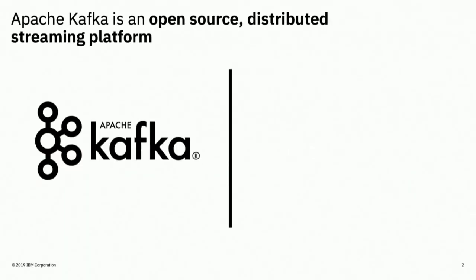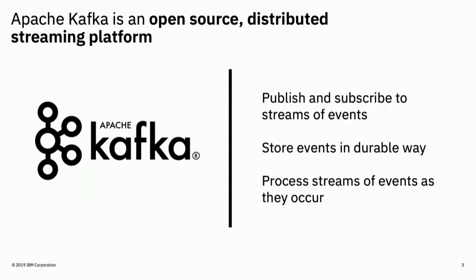Apache Kafka is an open source distributed streaming platform. Kafka allows you to publish and subscribe to a stream of events. You can store events in a durable way, and then you can process that stream of events as they occur.